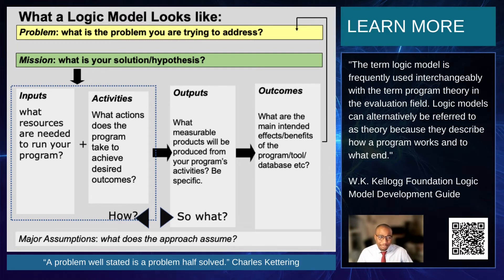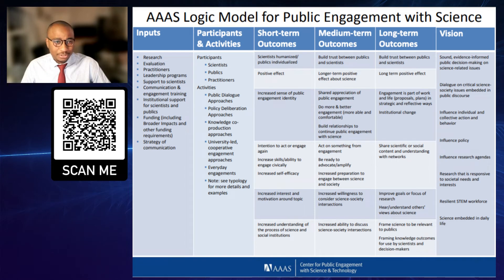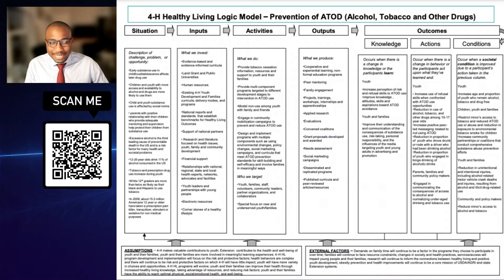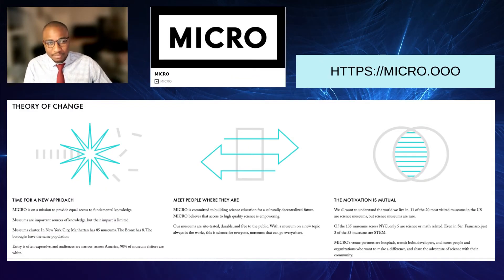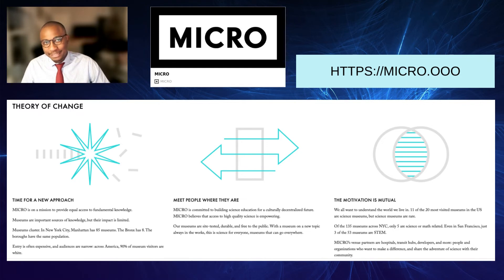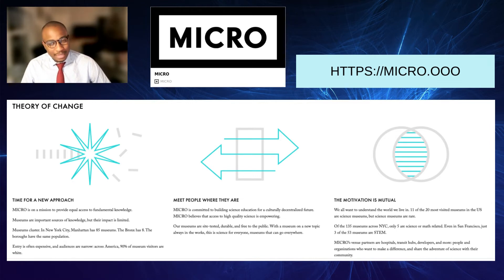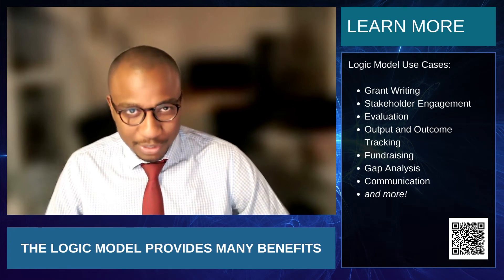There are some fantastic examples. Here's one from AAAS — take a look using the link or QR code below. You can see their outline, and logic models do come in different flavors; you can make adaptations to suit your needs. Another example is from an organization called MICRO, which are mobile-based museums based in New York City. They actually put their logic model on their website for everybody to see. I think that is exactly what we need to see more of — it makes you accountable and people can ask you questions against your logic model.